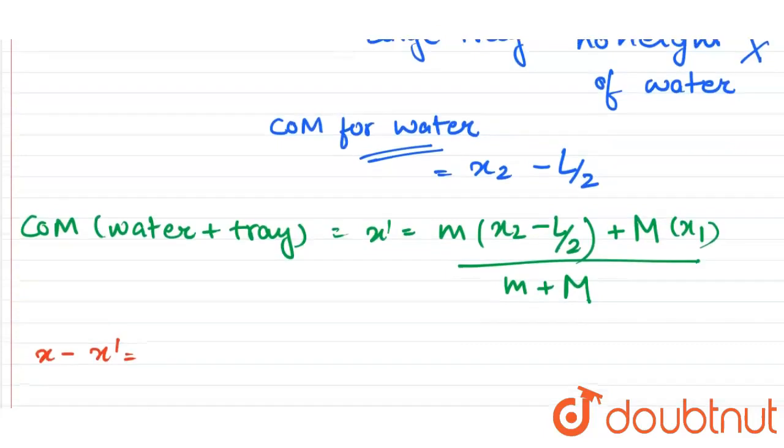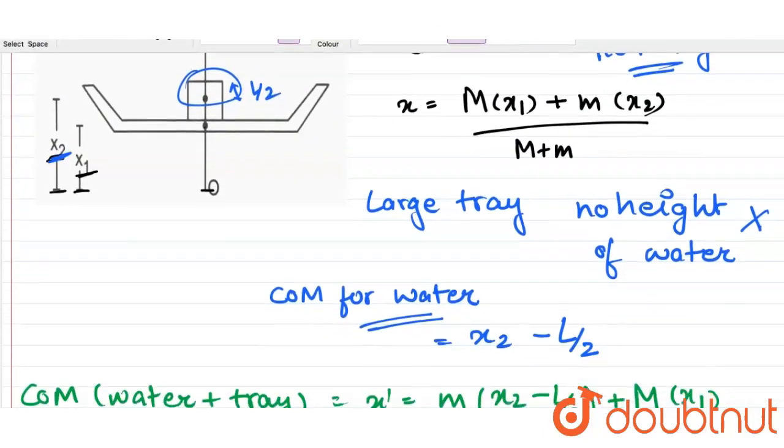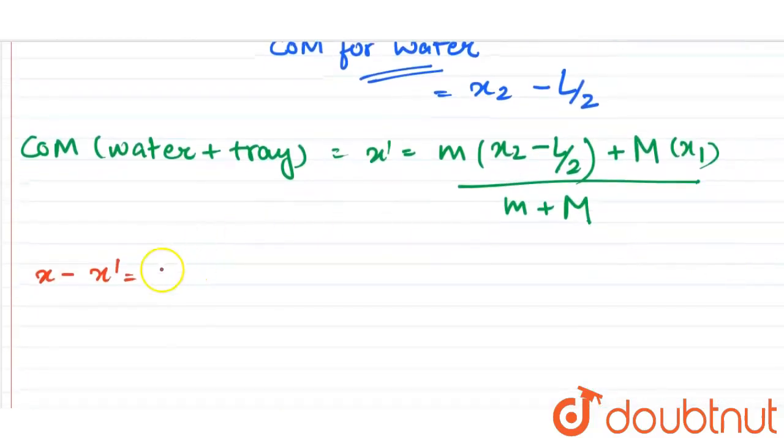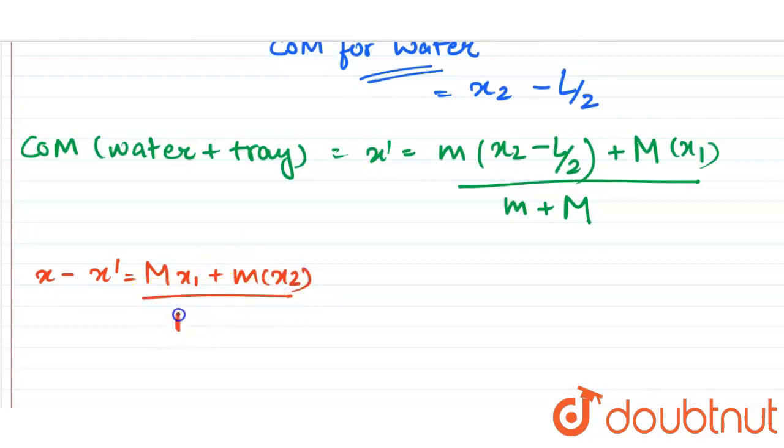So we will write X is mx1 plus small mx2 upon m plus M minus mx2 minus L by 2 plus capital M x1 upon m plus capital M.